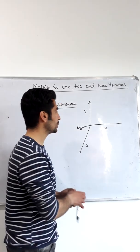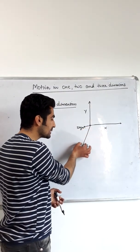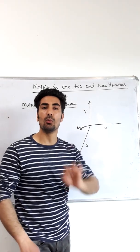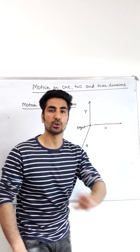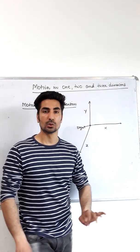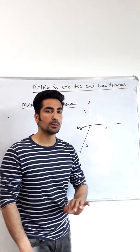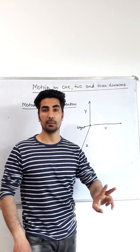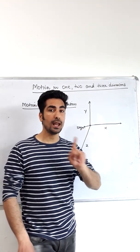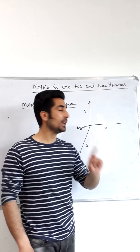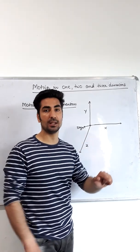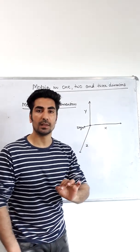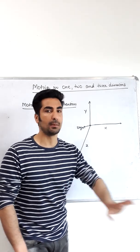If an object is moving along the z-axis only, that is also one-dimensional motion. So if an object moves along any one of the three axes — but not more than one — then we say that the motion of that object is one-dimensional.